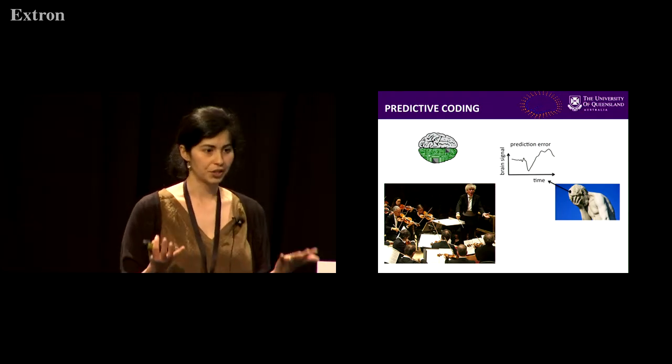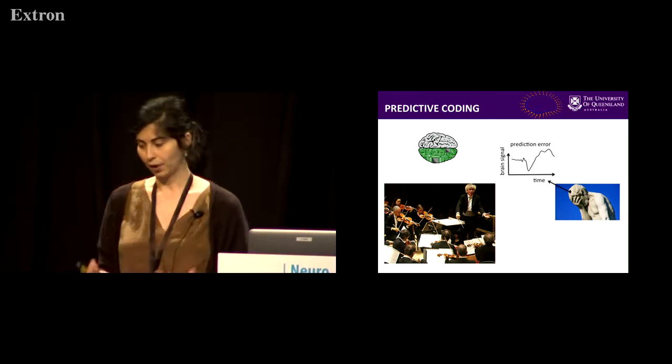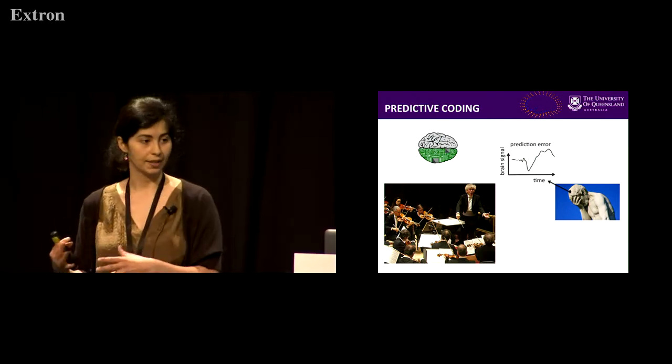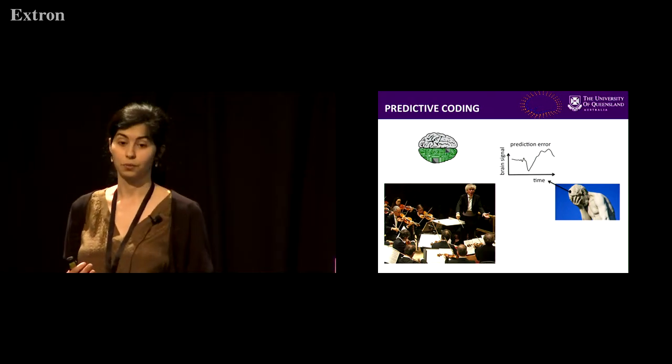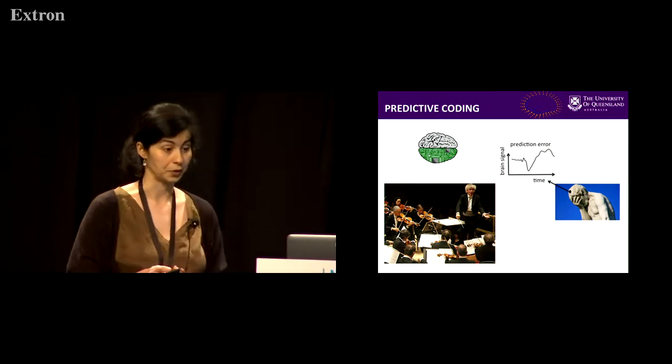We can call these prediction errors and there's all sorts of prediction errors in the brain. I'll be focusing more on the sensory, but there's a great deal of work looking at reward prediction errors in reinforcement learning.